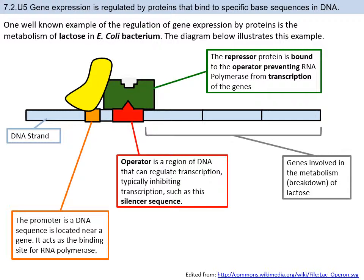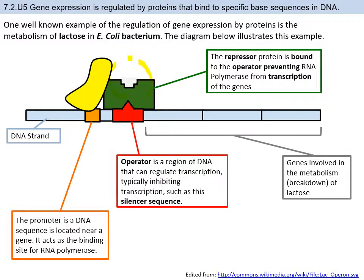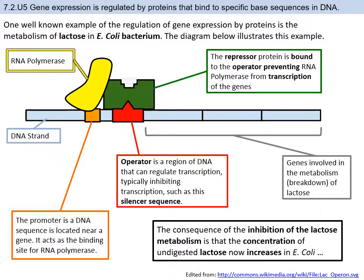The repressor protein is repressing or limiting transcription in our prokaryotic cells. Being a protein, it has a specific conformation and an active site. If something binds to that active site, there's a chance the protein is going to change shape, fall off the operator, and then RNA polymerase will be able to move forward. Normally, when E. coli is not around lactose, the repressor protein is stuck to the operator and there is no transcription of that section of DNA.